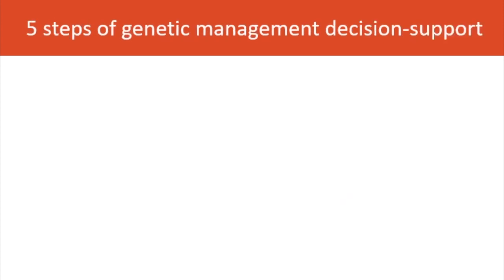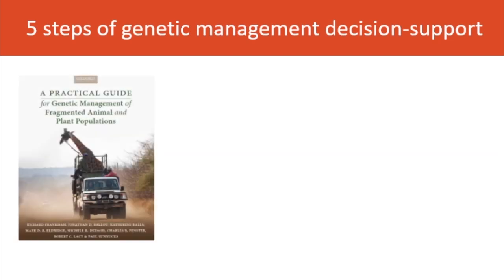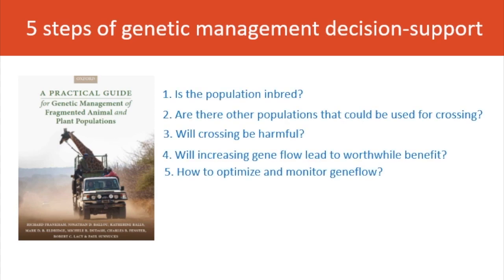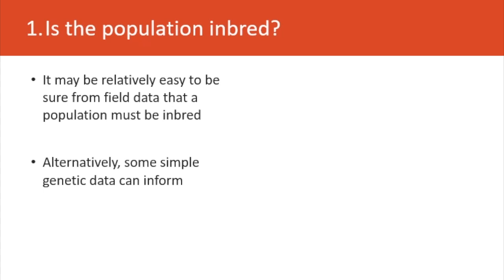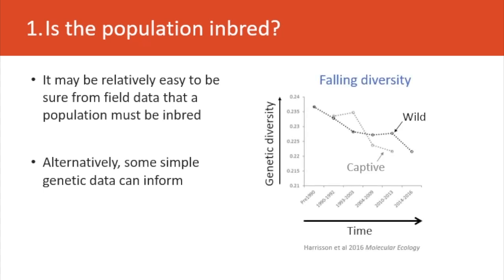I'd like to show an example of a five-step genetic management decision support process from this book and related materials. It asks five questions. First: is the population inbred? In many circumstances, it may be easy to determine from field data that a population is inbred, or some simple genetic data can be informative. In the case of the helmeted honeyeater, DNA samples collected over a number of years demonstrated that genetic diversity had been lost and was continuing to decline in both the wild and captive populations.